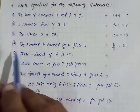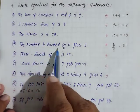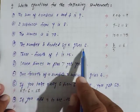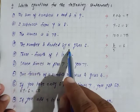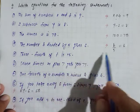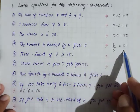Next, question number 4. The number b divided by 5 gives 6. If b is divided by 5, the value we get is 6. It becomes b upon 5 is equal to 6.